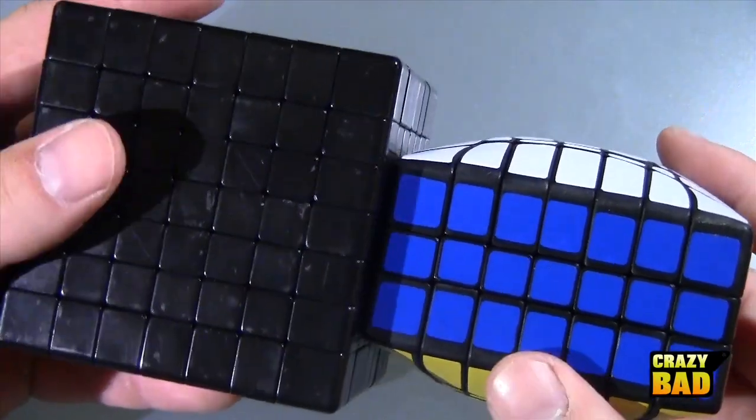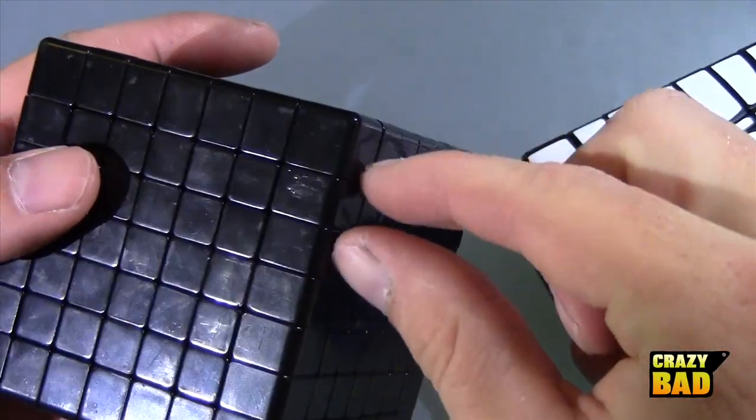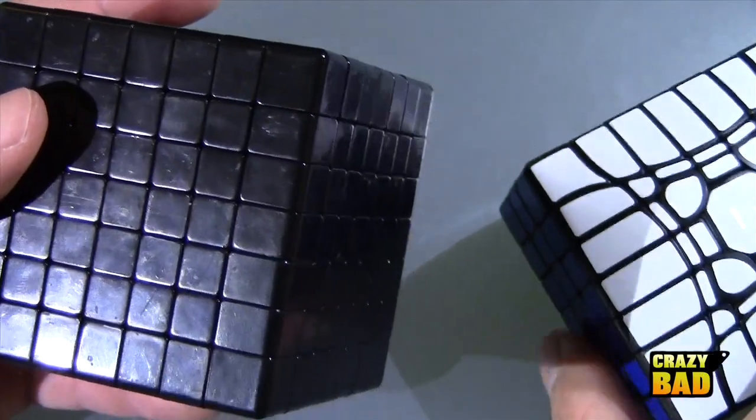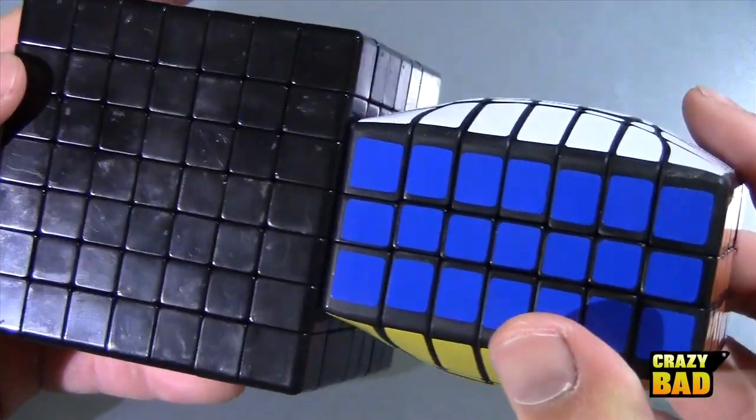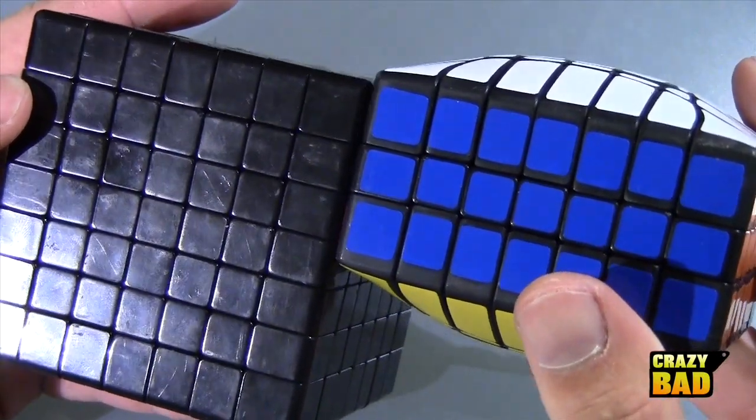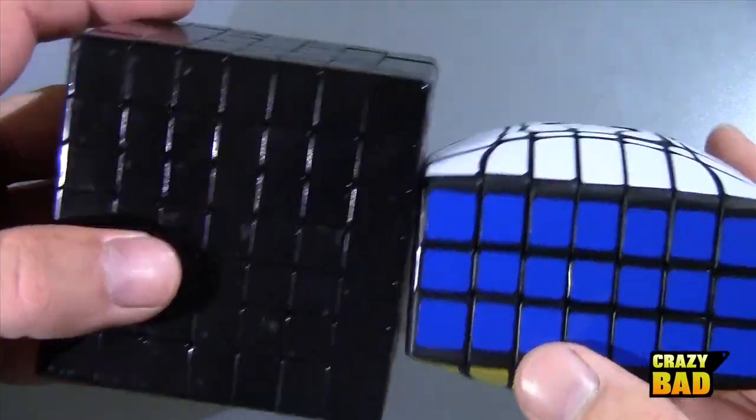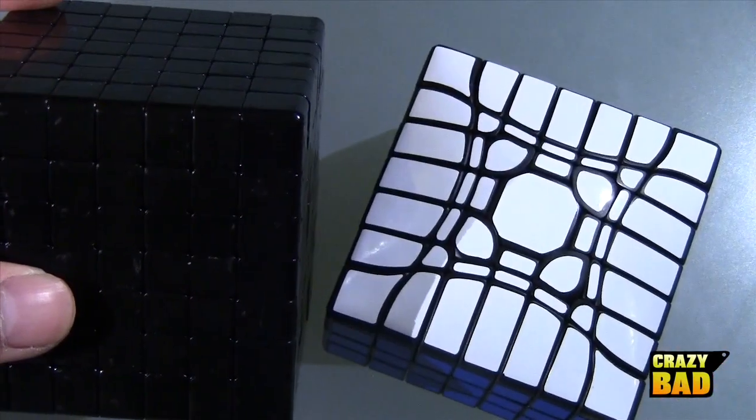Wow, that is crazy. So this is built out of a Shengshou 7x7. It's basically that. You can see he's just glued these three layers together and these three, and then he shaved it all down and shaped it.